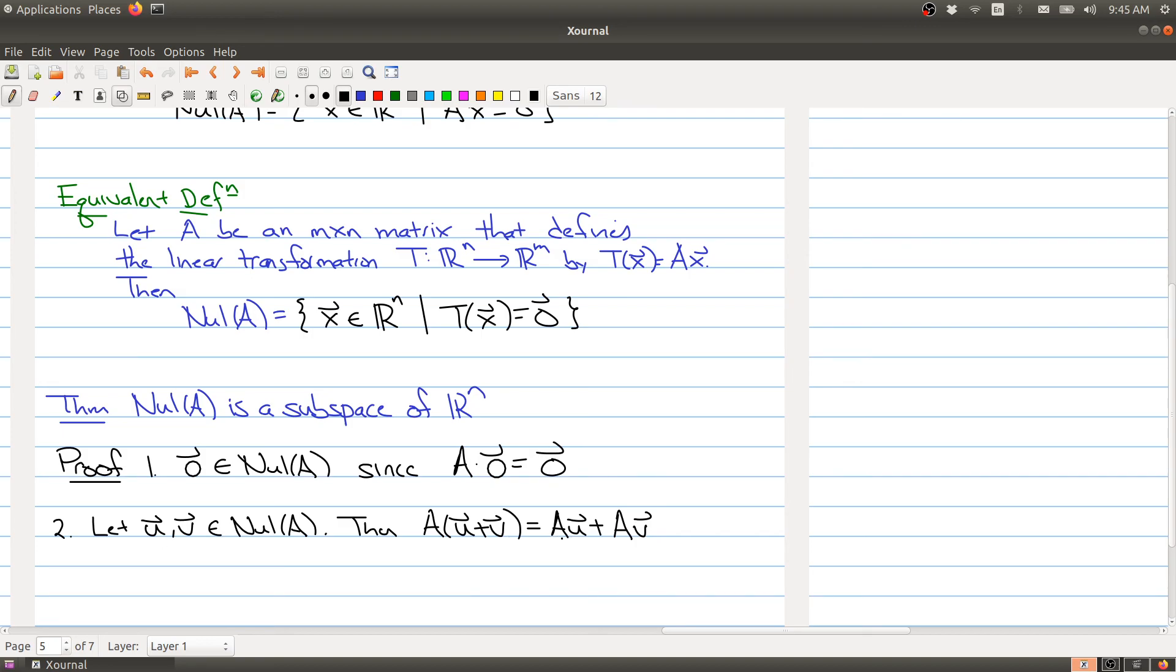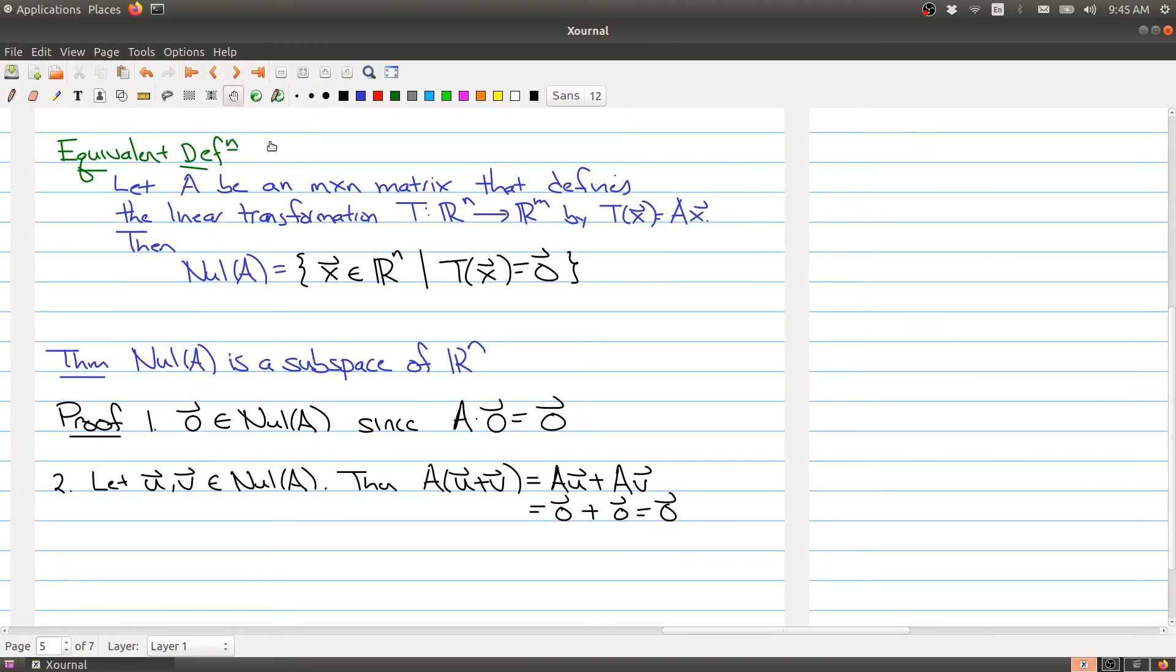But U and V are in the null space of your matrix, so that means that A times U is the 0 vector, A times V is the 0 vector. So I get the sum, which is 0. So U + V also belongs to the null space of your matrix.